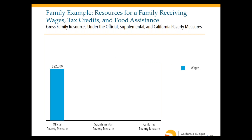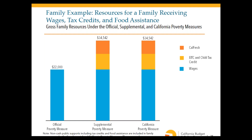Under the official measure, only cash income is counted — for this family, that's $22,000 in wages. Under the supplemental and California measures, resources also include the value of CalFresh benefits and the value of the Earned Income Tax Credit and Child Tax Credit, making their total resources higher under these measures.